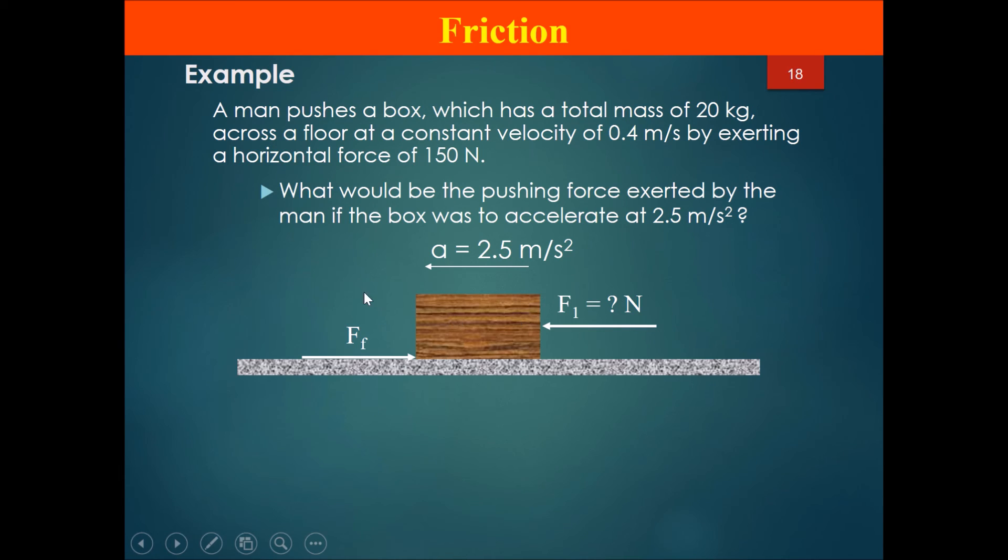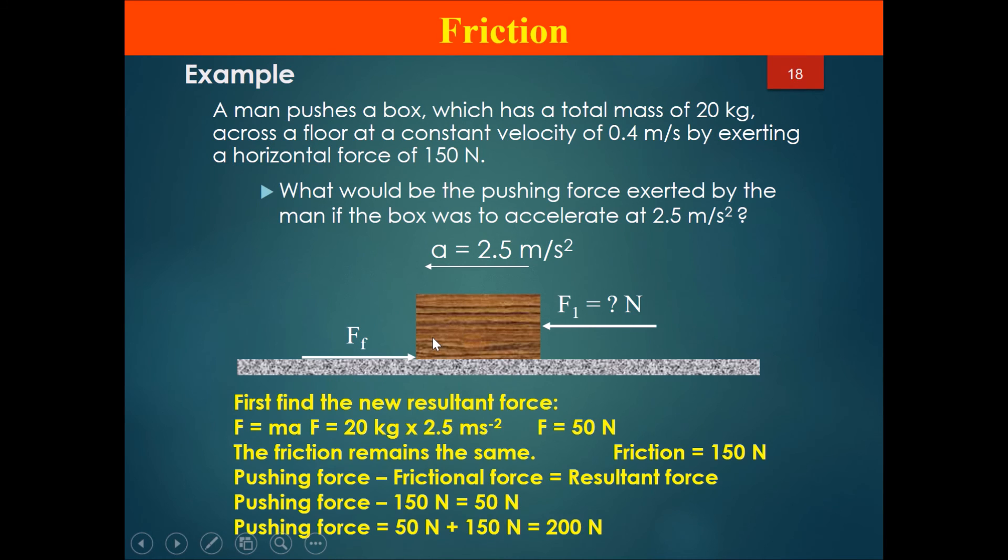The first solution is that we need to find the new resultant force on the box. So F = ma, and since the acceleration is 2.5 m/s², we multiply that by the mass of the box, 20 kg, and that should give us a resultant force of 50 N.